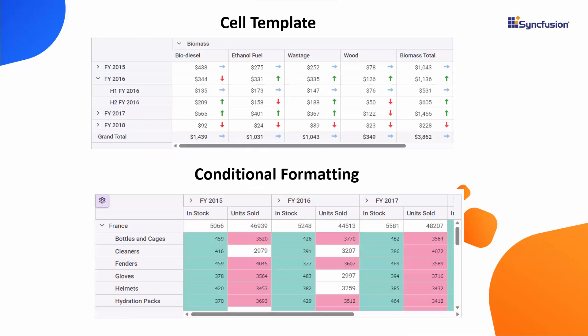Look at this example, where you can see the pivot table cells customized with profit, neutral, and loss icons based on the measured data. Green and pink background colors were applied to the cells by setting conditions for measure values. Now I will show how to achieve this customization at code level.